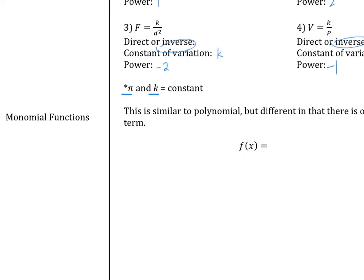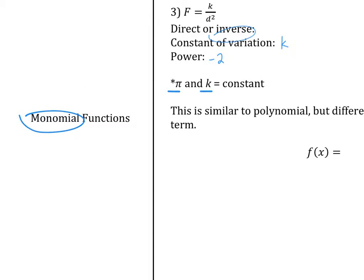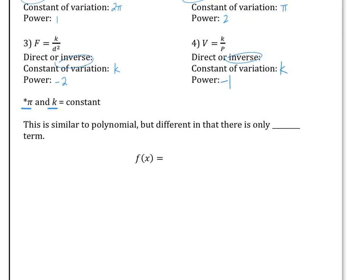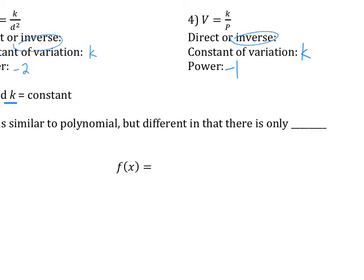Now let's talk about a special power function called the monomial function. Monomial function is basically exactly like the power function — k times x to a power — but the difference is that in a monomial function, the exponent has to be positive. We're basically taking one term out from a polynomial function, so that exponent has to be positive, not negative.